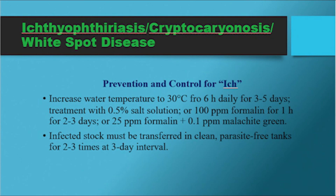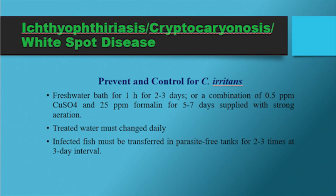Prevention and control for ichthyophthiriasis and cryptocaryonosis (white spot disease): increase water temperature to 30°C for 6 hours daily for 3 to 5 days. Treatment with 0.5% salt solution or 100 ppm formalin for 1 hour for 2 to 3 days, or 25 ppm formalin plus 0.1 ppm malachite green. For cryptocaryonosis, fresh water bath for 1 hour for 2 to 3 days, or a combination of 0.5 ppm copper sulfate and 25 ppm formalin for 5 to 7 days with strong aeration. Treated water must be changed daily and infected fish transferred to parasite-free tanks for 2 to 3 times at 3-day intervals.